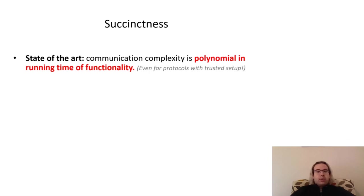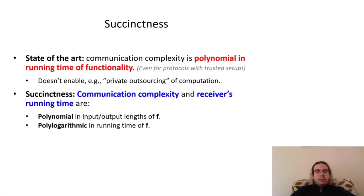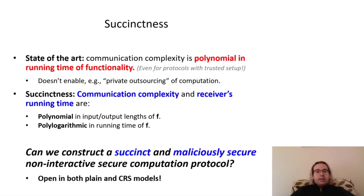All the protocols I've mentioned, even those which require models with trusted setup, have communication complexity which is polynomial in the functionality's running time. This, of course, would make state-of-the-art protocols less than ideal in the outsourced computation scenario we discussed earlier. Instead, what we would like is for the communication complexity and receiver's running time to be polynomial in only the input and output size of F and polylogarithmic in, or essentially independent of, the functionality's running time. We'll refer to this property as succinctness. This brings us to the main question our work will answer: can we construct a non-interactive secure computation protocol that is both succinct and maliciously secure?